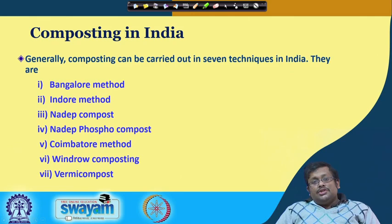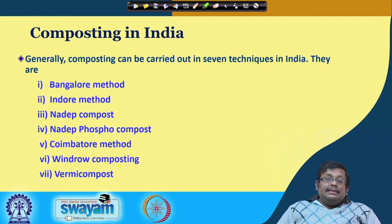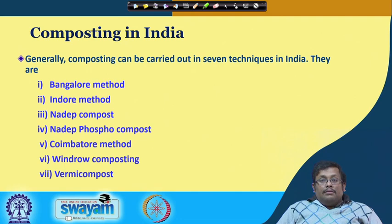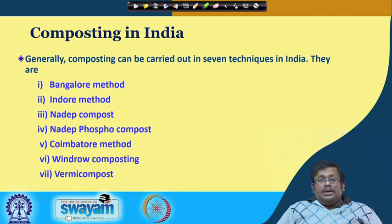Let us talk about composting in India. Generally, composting can be carried out by seven techniques in India: the Bangalore method, the Indore method, NADEP compost, NADEP phosphocompost, the Coimbatore method, Windrow composting, and Vermicompost. In this lecture we will be covering the Indore method, NADEP compost, and Vermicompost. The Bangalore and Coimbatore methods are also important, but you can consult the literature for details on those.